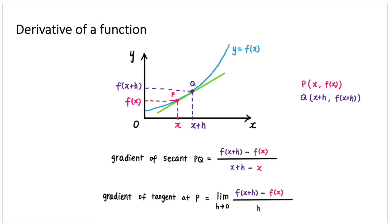A tangent line will only touch the graph once, and here it becomes an instantaneous rate of change as well. Now we have a secant line and we want to make it a tangent line. We can make h as close to zero as possible, and that will give us the tangent line eventually. We know that the gradient of the tangent to the curve of f of x at point p is the limit of this expression as h approaches zero. This is defined as the derivative of a function — also the first principle. We denote the derivative of f of x as f dash of x, and the derivative is the limit of this expression as h approaches zero.